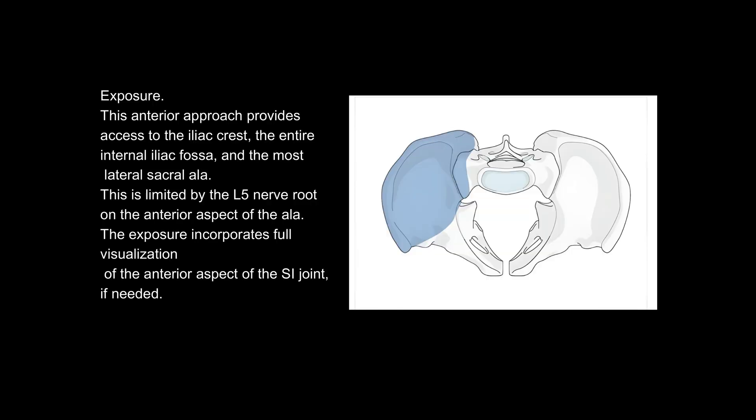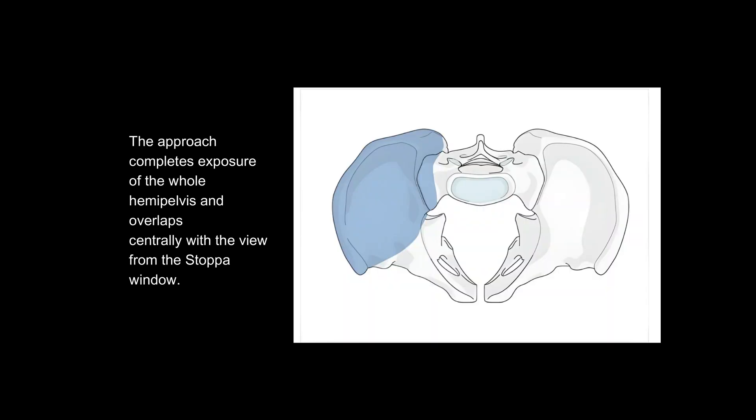This anterior approach provides access to the iliac crest, the entire internal iliac fossa, and the most lateral sacral ala. This is limited by the L5 nerve root on the anterior aspect of the ala. The exposure incorporates full visualization of the anterior aspect of the SI joint, if needed. The approach completes exposure of the whole hemipelvis and overlaps centrally with the view from the stopper window.